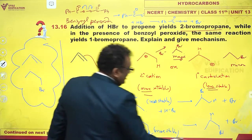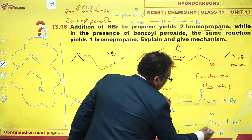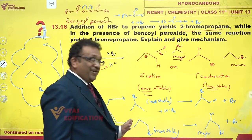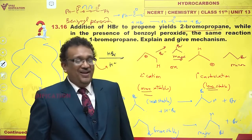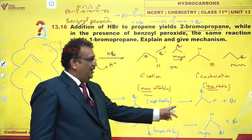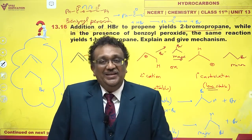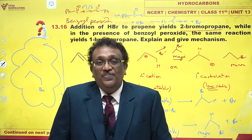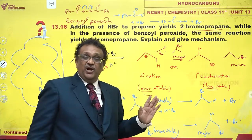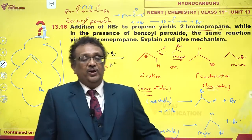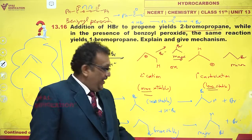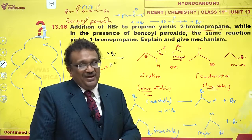Now do you see that 1-bromopropane is the major product? The anti-Markovnikov product is the major product. Why? Because the secondary radical is more stable than the primary radical, and in this case the secondary radical happens to be the intermediate. So as per the mechanisms, when you just add HBR to propene it is electrophilic addition and you get 2-bromopropane as the major product. But when you add benzoyl peroxide, the mechanism changes to free radical mechanism, and 1-bromopropane becomes the major product.